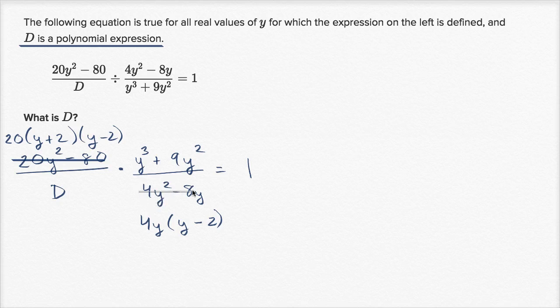Alright, so let me cross that out. So this is the same thing as 4y times y minus 2, and I already see that this y minus 2 here and this y minus 2 here are going to cancel out.